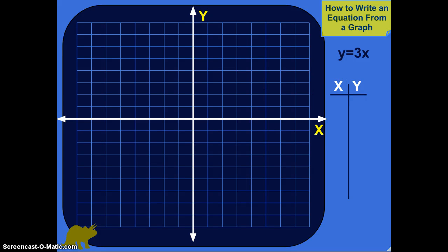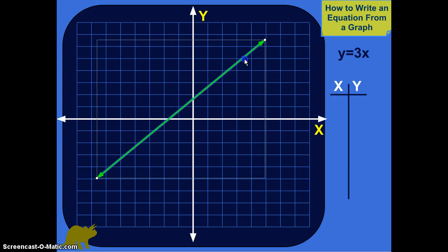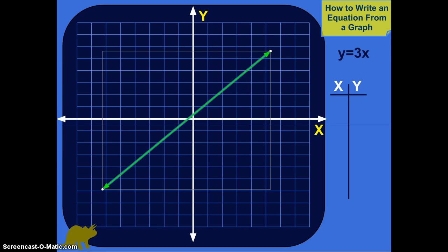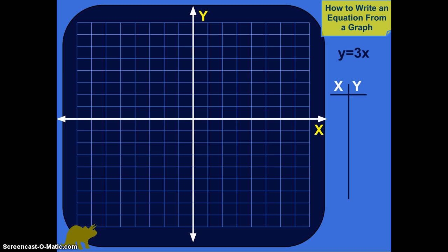How to write an equation from a graph. Say like we had a line like that. I'm going to show you how you can write an equation like y equals 7x minus 30, something like that.